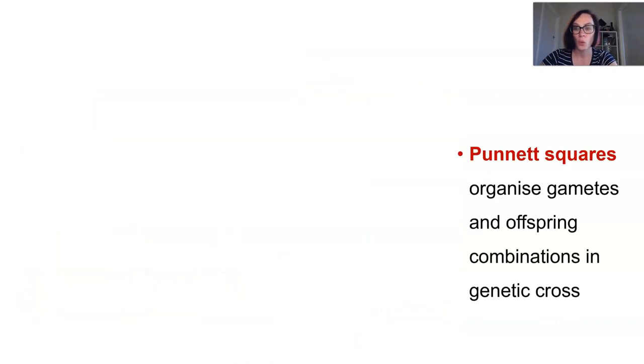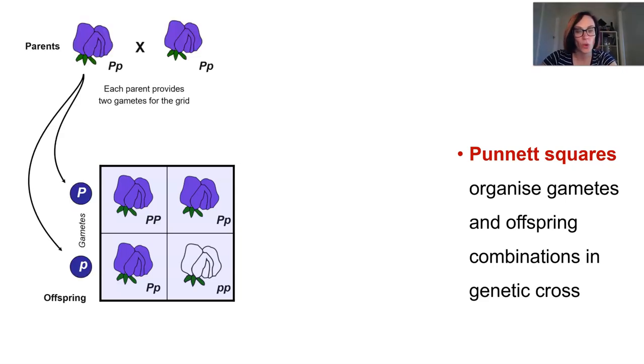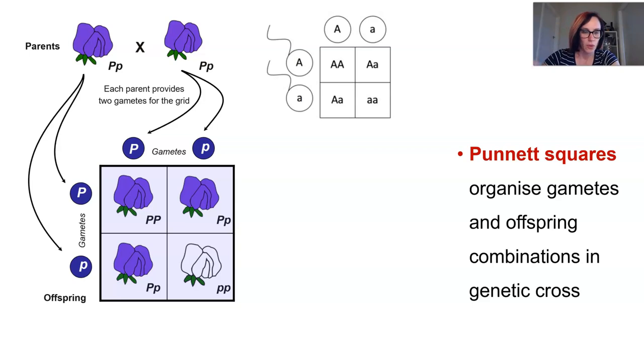Now Punnett squares are a way to organise and predict the next generation of offspring's genotypes, and therefore phenotypes, in a genetic cross. So the gametes that each parent have available are considered, and knowing that the law of segregation will lead to a random assortment of which way the maternal and paternal alleles are going to be sorted, and then all the combinations that will happen at fertilisation are also going to need to be considered. So we have all the different ones, we can look at it in the sense of sperms and eggs, but in this case for plants it's not really relevant.